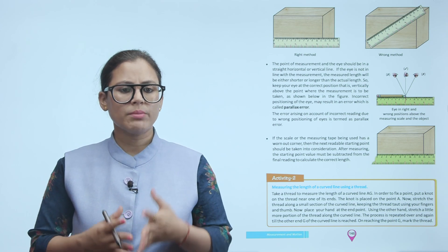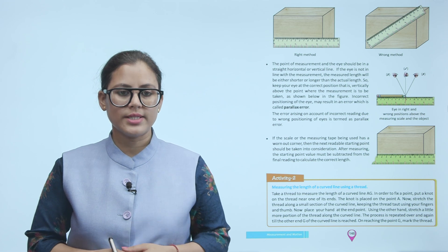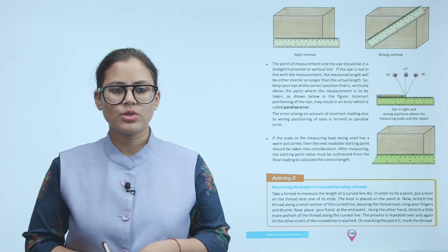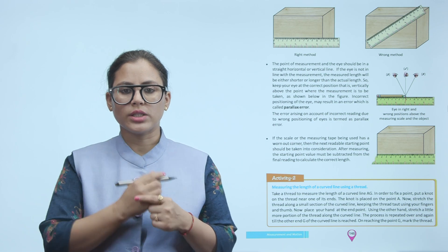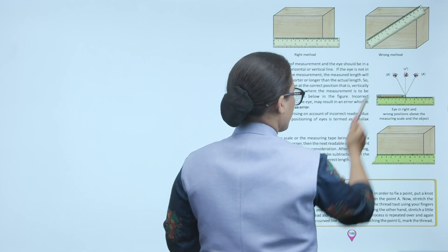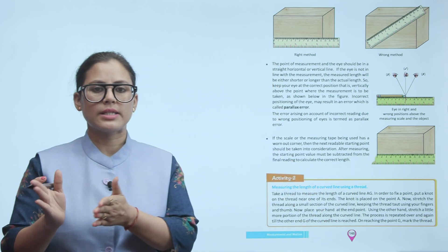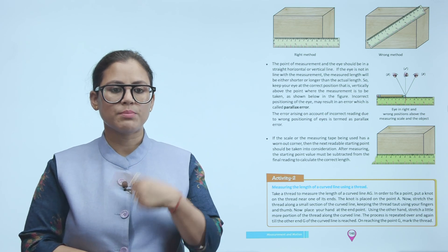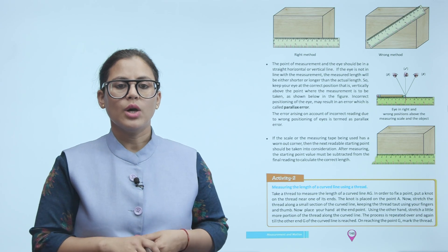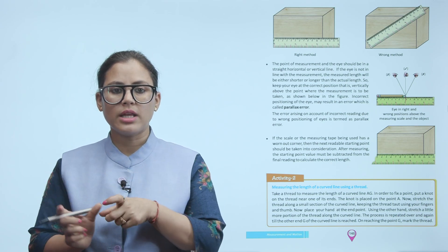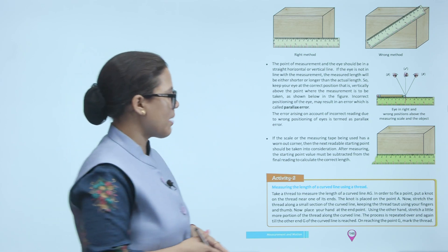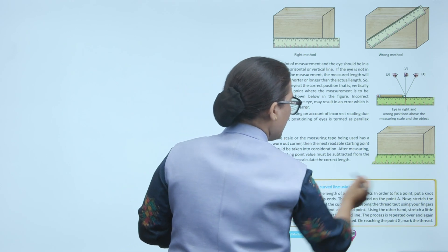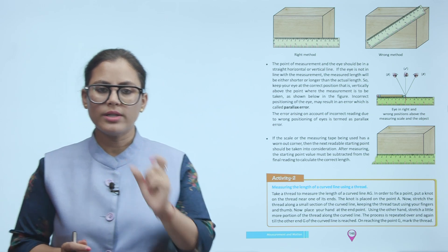If the scale or measuring tape being used has worn-out corners, then the next readable starting point should be taken into consideration. After measuring the starting point value, it must be subtracted from the final reading to calculate the correct length. For example, if you start from 3 and end at 10, the actual length is 10 minus 3, which equals 7 cm.